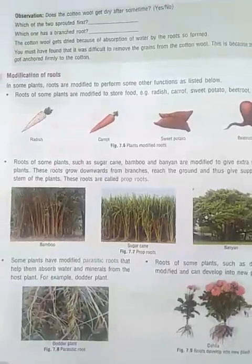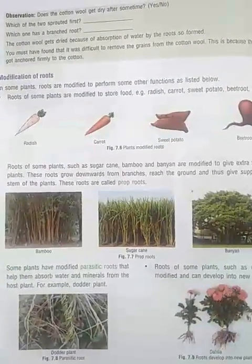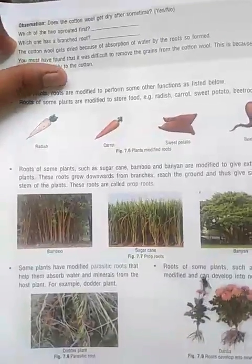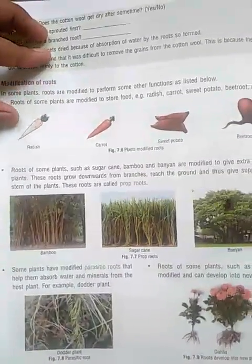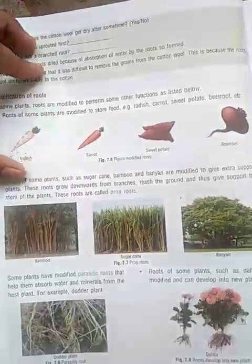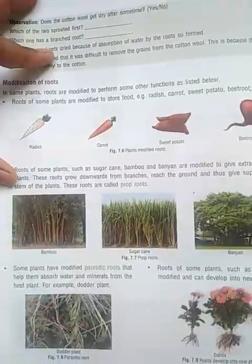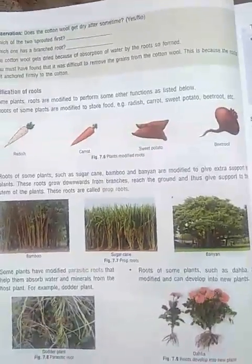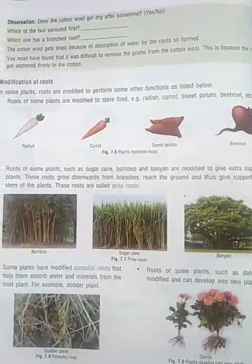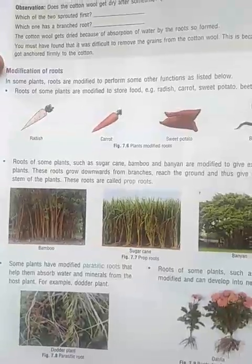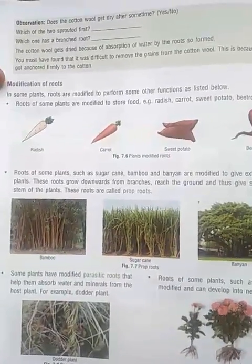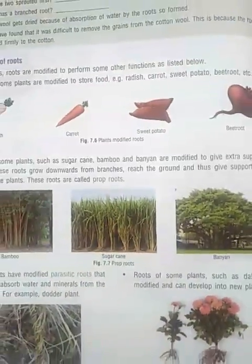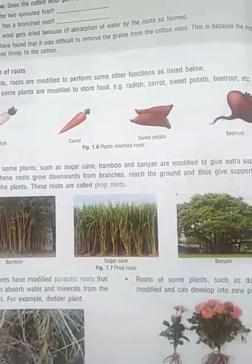In some plants, roots are modified to perform other functions. Some plant roots are modified to store food, such as radish, carrot, sweet potato, and beetroot. These roots store food products in them. Roots of some plants such as sugarcane, bamboo, and banyan are modified to give extra support to the plant.